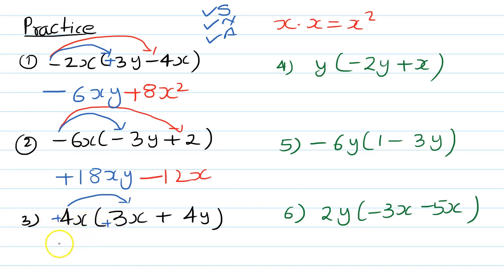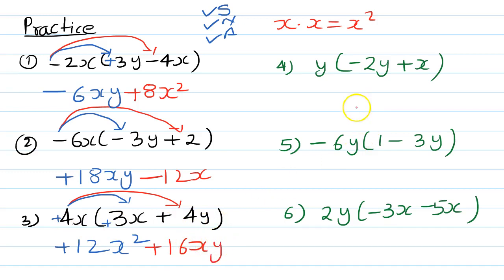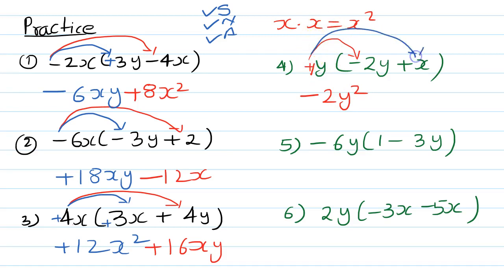Continuing: minus times plus becomes minus; 6 times 2 is 12; alphabet is x — giving minus 12x. Now if there is no sign it means plus. Plus times plus stays plus; 4 times 3 is 12; x times x is x squared — giving plus 12x squared. Then plus times plus stays plus; 4 times 4 is 16; x times y is xy — giving plus 16xy.